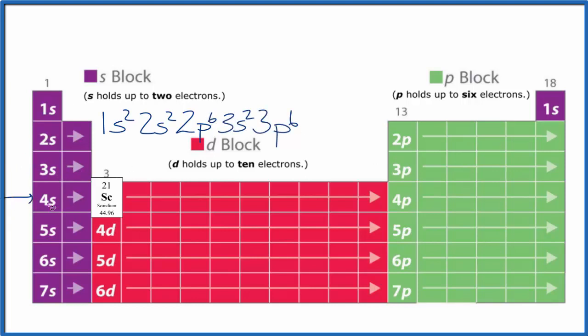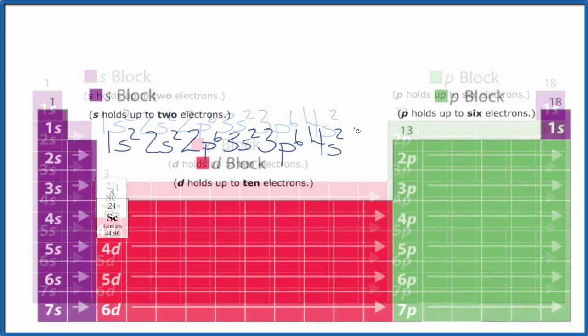To the fourth energy level, 4s¹, 4s², and we get to scandium, which is right there, it's 3d¹. So we have our scandium, which is 3d¹, and if you count up all the electrons here on the top, it's going to equal 21.